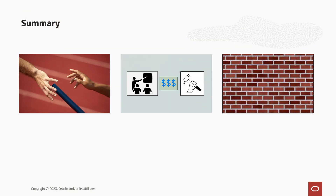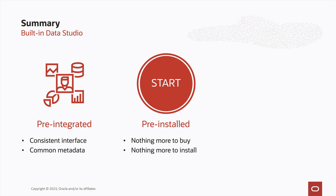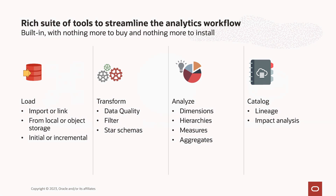In summary, instead of all the chaos associated with unreliable integration among the components of a Franken-stack — the expense of acquiring, deploying, and maintaining it all, and fumbling around with no idea of data lineage or dependencies — Autonomous Database has a built-in Data Studio. It's pre-integrated, with a consistent interface and a common set of metadata. It's pre-installed, so there's nothing more to buy and nothing more to install. The common metadata shines a bright light on data lineage and impact analysis. Data Studio includes tools for data load, data transformation powerful enough for a data engineer yet simple enough for a departmental analyst, data analysis, and a data catalogue.